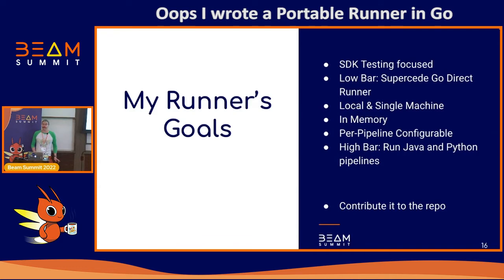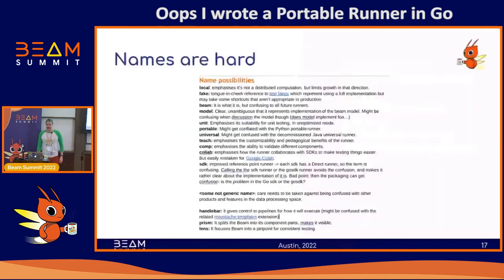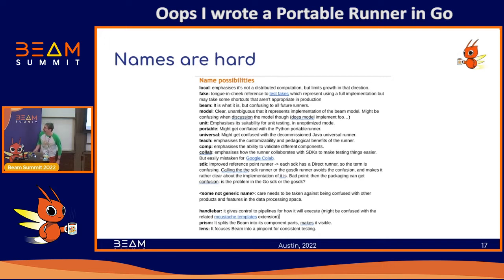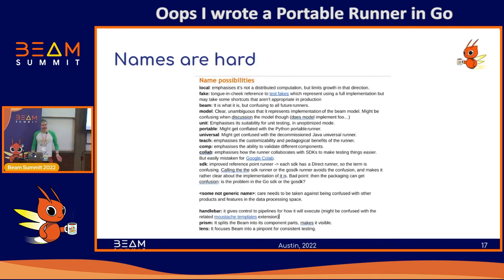One of the big blockers of contributing it to the repo is that names are very hard. I did a lot of brainstorming on different facets of what could be a good name for this runner and I haven't quite decided on one yet. The ones at the bottom — Prism and Lens — are really good beamy names, but I would feel bad about taking one of those names if it's a subpar runner. So maybe later.